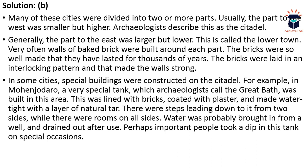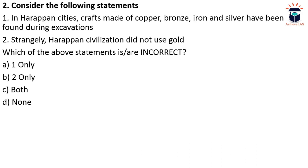Many of these cities were divided into two or more parts. Usually the part to the west was smaller but higher — it is described as the citadel by archaeologists. The part to the east was larger but lower and is called the lower town. Often walls of baked brick were built around each part. In Mohenjo-daro, archaeologists found a Great Bath built in the citadel area, and granaries have also been unearthed.